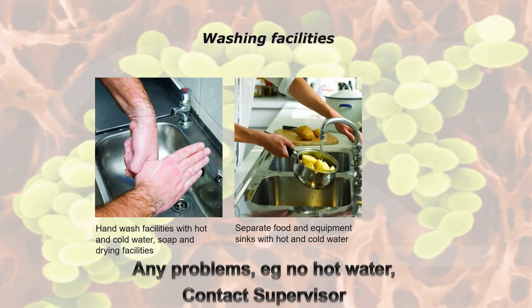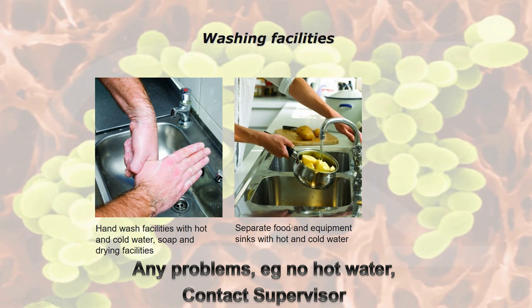Regarding washing facilities: you must, by law, have a hand washing sink. A question that sometimes comes up: what must a hand wash facility have as a minimum? It must have hot and cold water, soap, and drying facilities. Keep other sinks separate — food and equipment sinks should be kept separate from each other. If you have any problems such as no hot water or the sink isn't working, you must contact your supervisor.